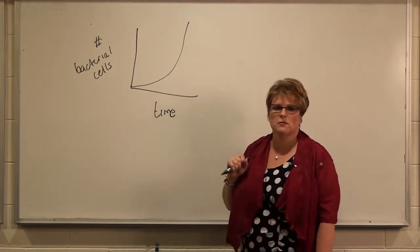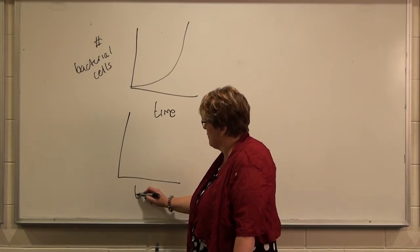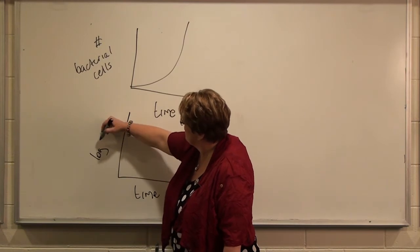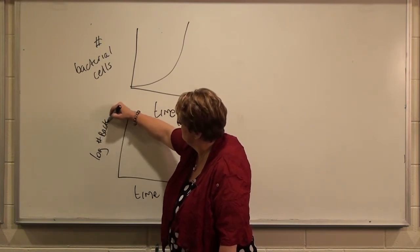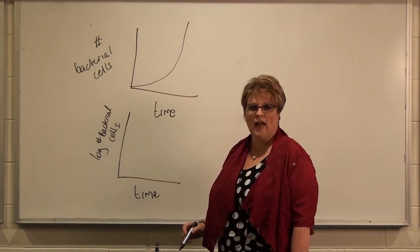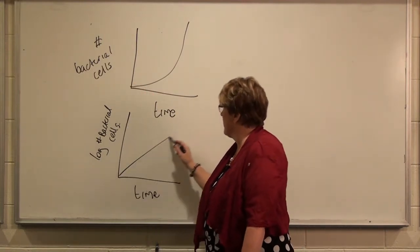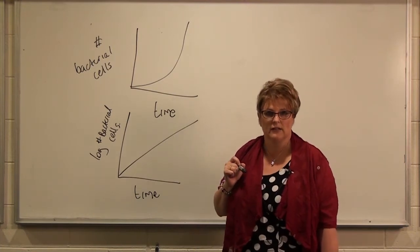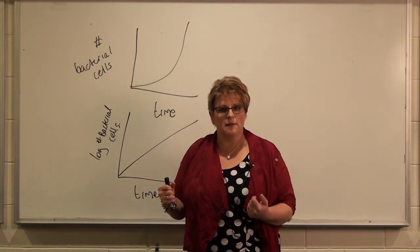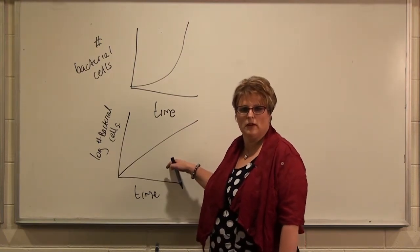So how most microbiologists graph this information is to plot time on one axis, but the log of the number of bacterial cells on the other axis. By taking the logarithm of the numbers of cells, we generate a linear graph from the same data. We often use logarithms to transform experimental data into something we can graphically use and interpret in a more simple and meaningful way.